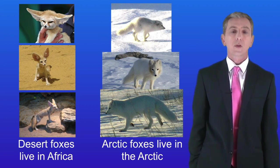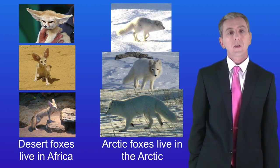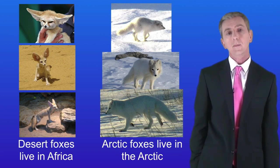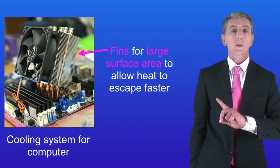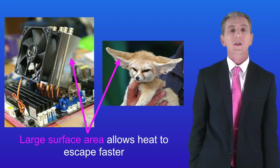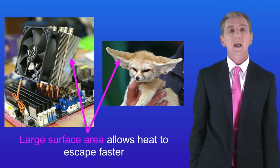There is one final adaptation that both of these animals show. Both the desert fox and the arctic fox have fur on the bottom of their feet but for two different reasons. In the case of the desert fox this fur protects the fox from the heat of the sand. But in the case of the arctic fox the fur reduces the amount of heat loss by conduction to the snow. Humans have learned how to keep machines cool by using the example of animals. A cooling system for a computer has fins which increase the surface area allowing heat to escape faster. Both the computer cooling system and the desert fox have a large surface area so that heat can escape faster.